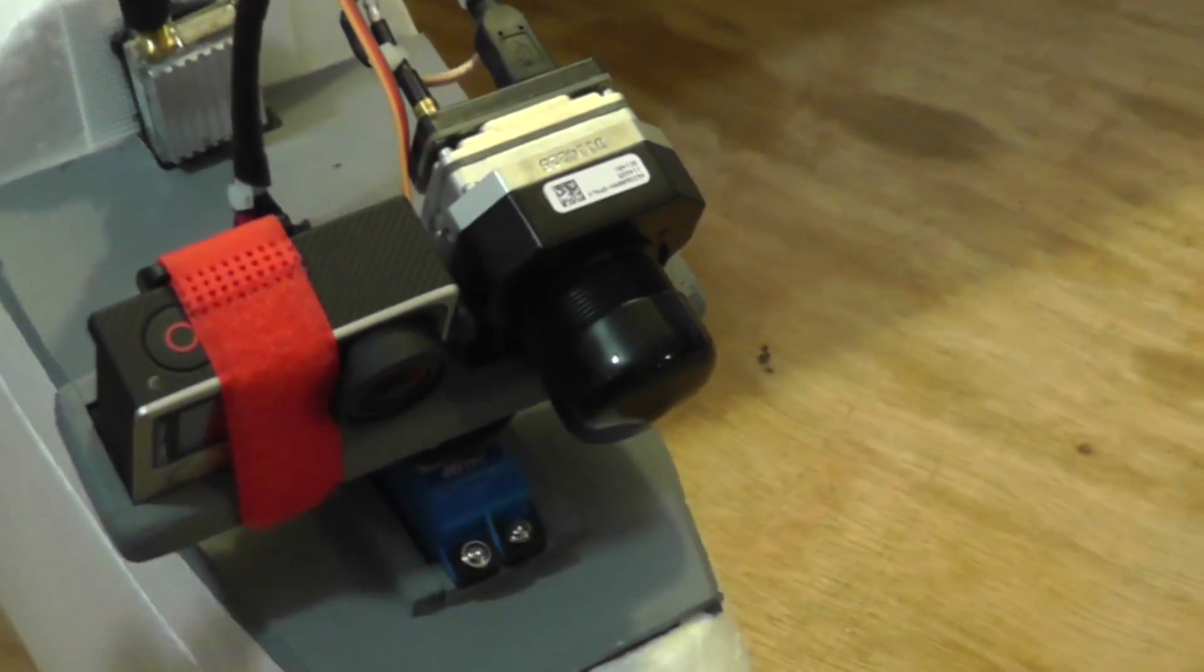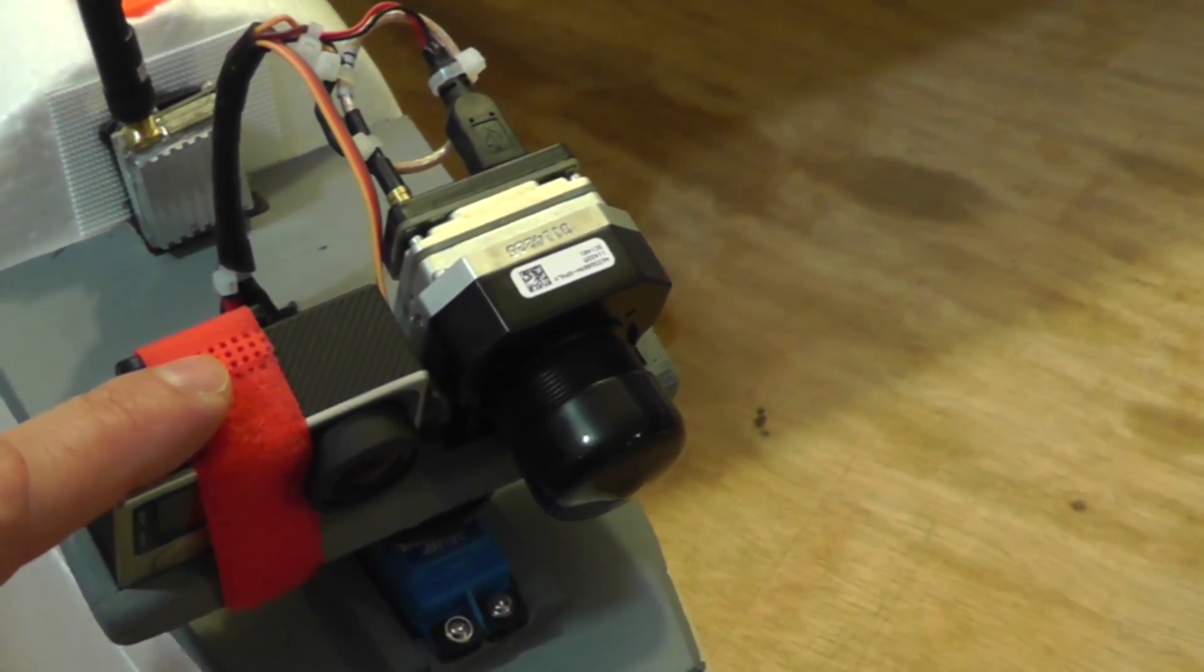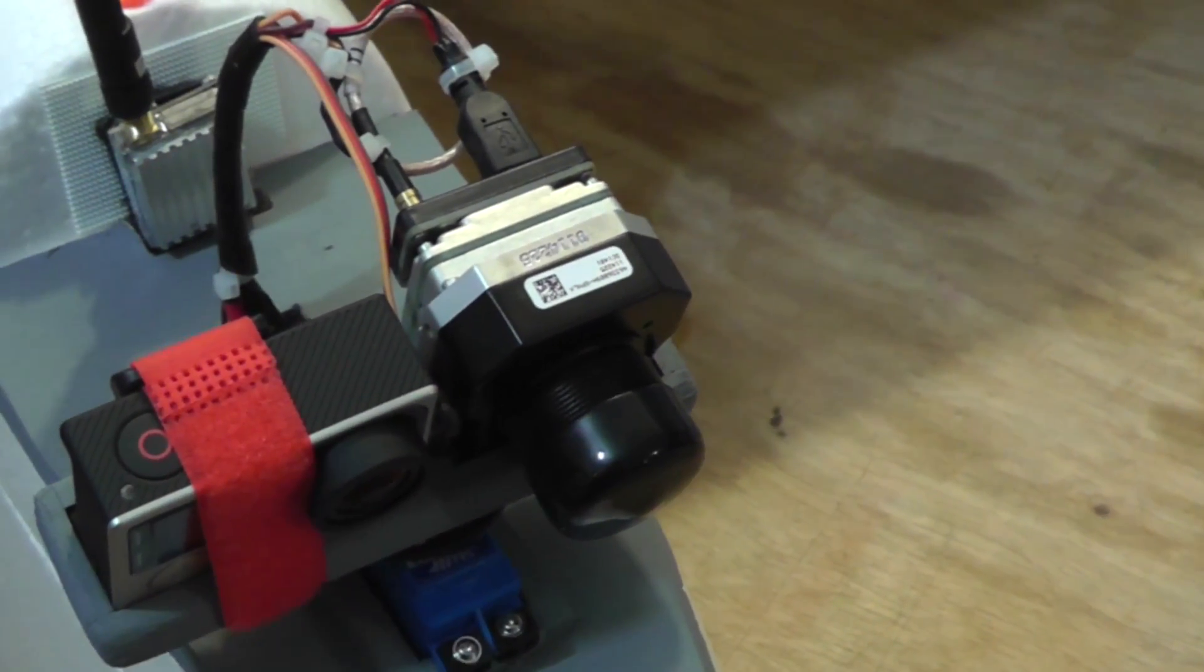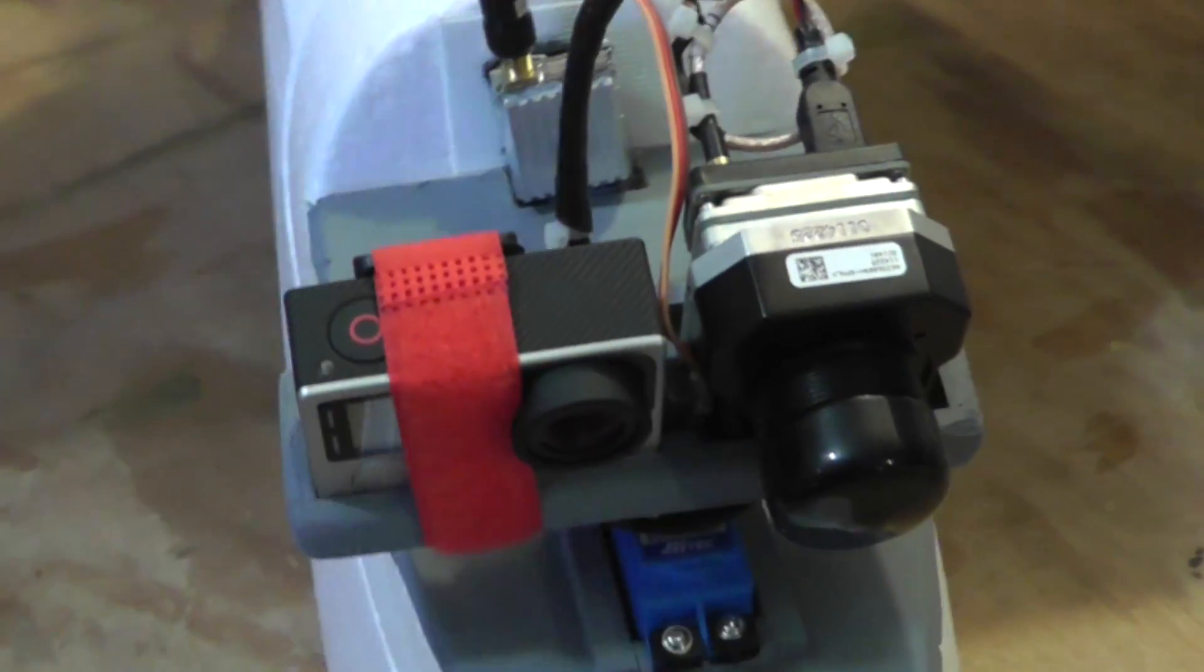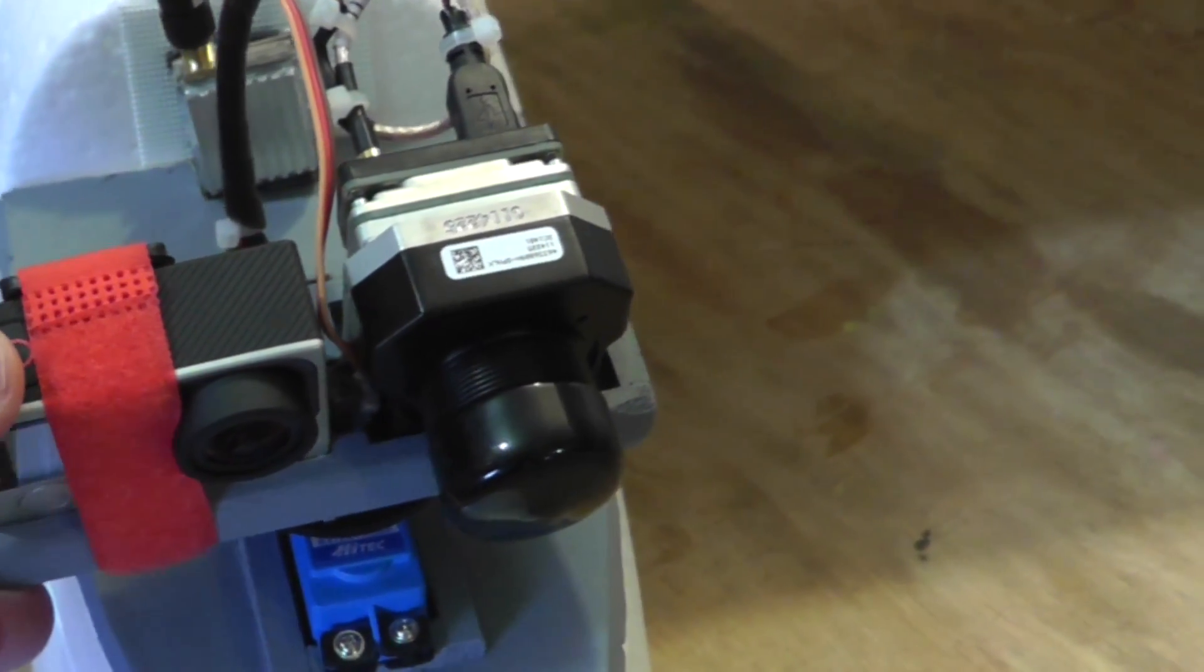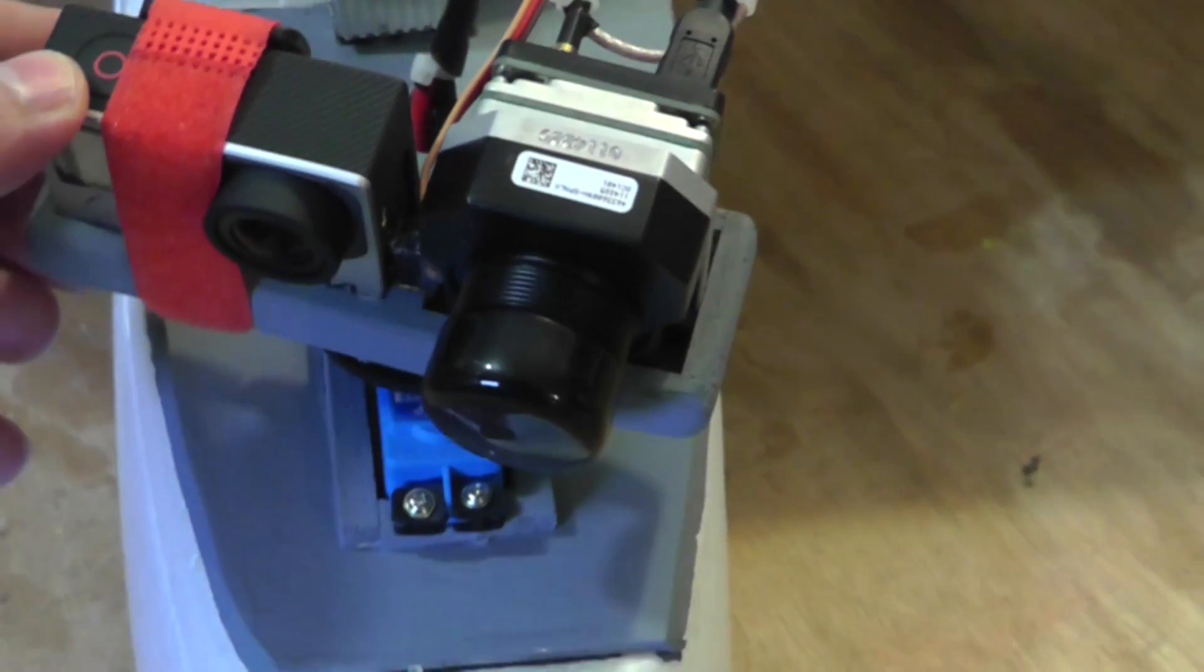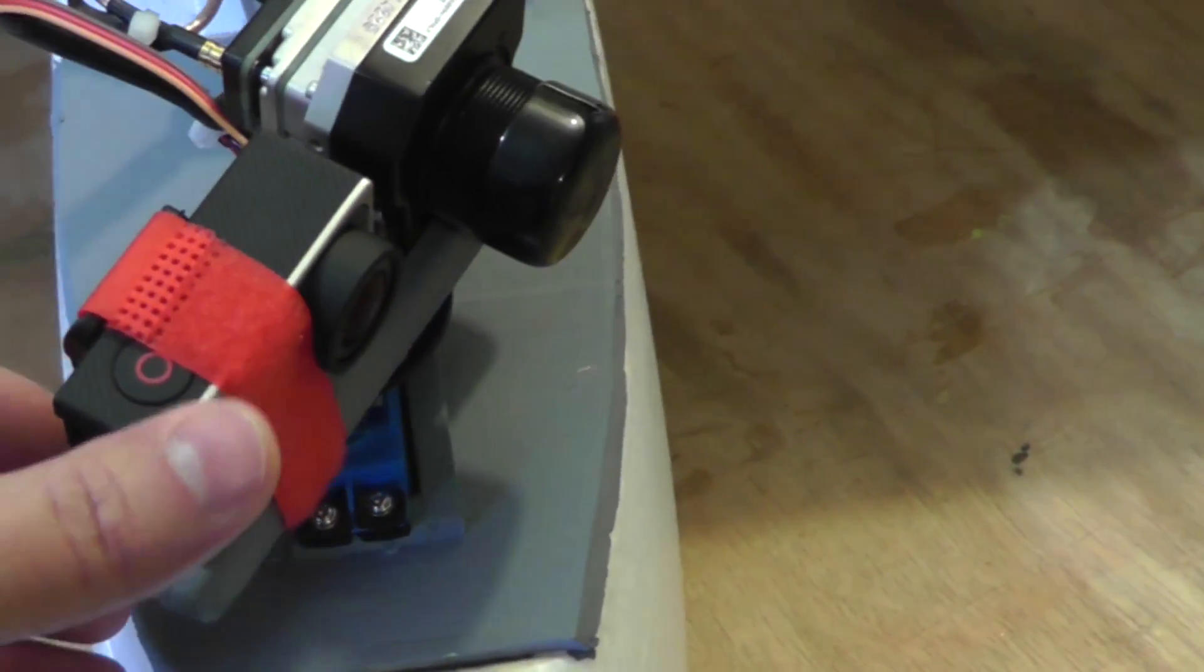Now coupled with that is a GoPro for high definition video recording. So the idea here is that you'll fly and you'll actually find your animals using the thermal camera. But for most of the detail that you want to know about what they're doing and what they're looking like, you're going to depend on high definition video recording. So these cameras will point in the same direction and they're on a 180 degree servo. So as you fly, you can pan around to greatly increase your field that you can cover as you're flying.